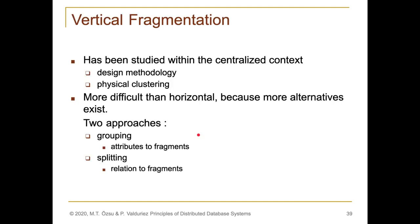Vertical fragmentation has been studied within the centralized context because in the distributed context, vertical fragmentation is a little bit harder than horizontal fragmentation for multiple reasons. In vertical fragmentation, we are not going to fragment relations based on tuple values — it's vertical. So for that purpose, we might compromise the referential integrity of relations while splitting them into different sub-relations. We have to consider the relationship among these columns or attributes while splitting them into sub-relations. Due to this fact, vertical fragmentation is among the most complex fragmentation techniques we have at hand.